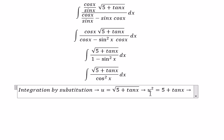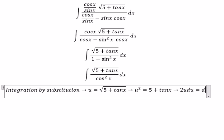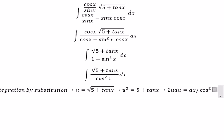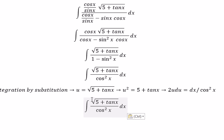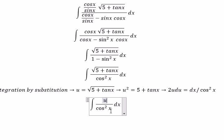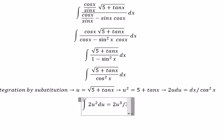After that, we take the first derivative on both sides. The square root will change to U, and this one will change to 2U dU. And we get 2U to the power of 3 over 3.